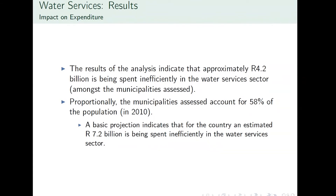The results indicate that 4.2 billion rand is being spent inefficiently in the water service sector for the 77 municipalities included, representing 58% of the population. A basic projection for the full country suggests approximately 7 billion rand is being spent inefficiently in the water services sector, indicating significant room for cost savings.